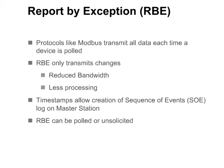Note that RBE can be either polled or unsolicited. With polled RBE, the master polls the outstation for events and only changes are reported. Although some bandwidth is used for polling, this is still more efficient than protocols like Modbus, in which the master station must poll all data. With unsolicited RBE, the outstation sends the changes as they occur, without having to be polled. Polled and unsolicited RBE will be discussed in more detail later in the course.